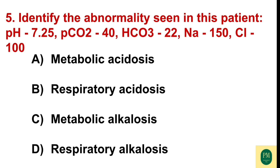Identify the abnormality seen in the patient: pH 7.25, PCO2 40, HCO3 22, Na 150, Cl 100. Option A: metabolic acidosis. Option B: respiratory acidosis. Option C: metabolic alkalosis. Option D: respiratory alkalosis. The correct option is Option A — metabolic acidosis.